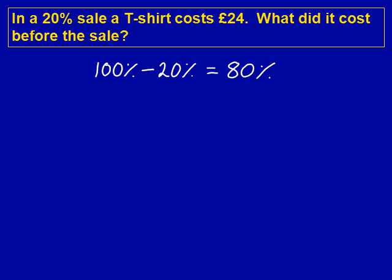This is the first line of our working out. 80% is therefore £24, as it says in the question. 20% has been taken off, so we're left with 80%, and the question tells us that the answer is £24. So 80% equals £24.